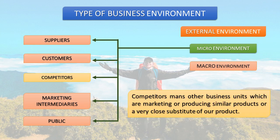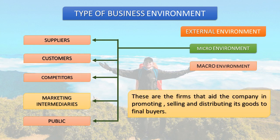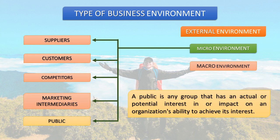Competitors means other business units which are marketing or producing similar products or very close substitutes. A business has to adjust its various activities according to the action and reaction of competitors. Marketing intermediaries are firms that aid the company in promoting, selling, and distributing its goods to final buyers — they are the vital links between the company and final consumers. Finally, public is any group that has actual or potential interest in or impact on an organization's ability to achieve its goals. Some companies are seriously affected by public opinion, for example through media.